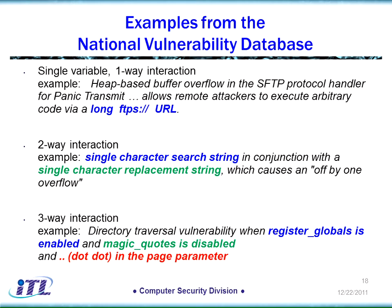Here are some examples from the National Vulnerability Database. At the top in blue, a one-way interaction — a single factor involved in a failure — a typical problem where somebody didn't allocate enough memory to read the data into. The second line is a two-way interaction: a failure occurred when there was a single-character search string and a single-character replacement string. If you had a test where only one of those conditions was true, that test would pass and you would not detect the problem. At the bottom is an even more complex problem with three factors involved — a three-way interaction — a buffer overflow where all three factors had to be true for that vulnerability to occur.